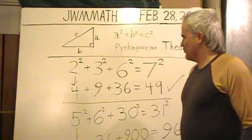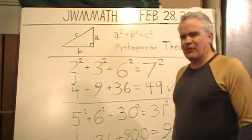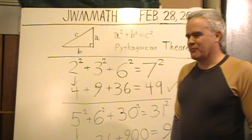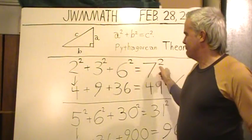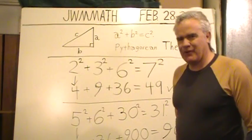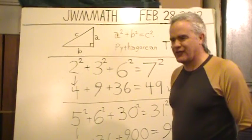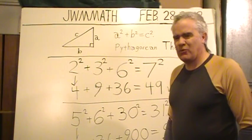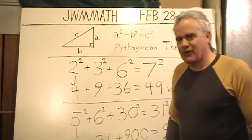But does this always work? Can you always pick any number, add one, multiply, and add one again to build the sum of squares? Can it be done with decimals and fractions? Or how about irrational numbers or imaginary numbers?